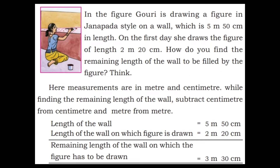In the figure, Gauri is drawing a figure in Janapada style on a wall which is 5 meter 50 centimeter in length. On the first day, she draws a figure of length 2 meter 20 centimeter. How do you find the remaining length of the wall to be filled by the figure? Here, measurements are in meter and centimeter. While finding the remaining length, subtract centimeter from centimeter and meter from meter.